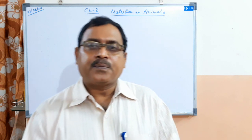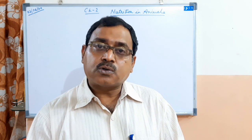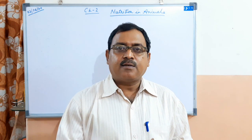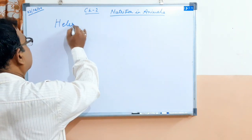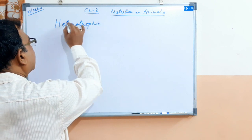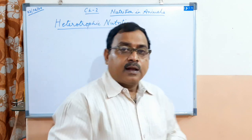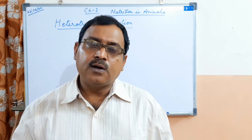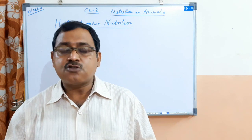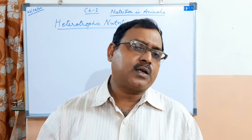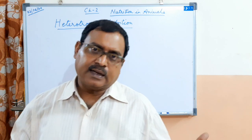When we did nutrition in plants, we learned about autotrophic nutrition. Here we learn about heterotrophic nutrition. All living organisms require food to stay alive. Plants can manufacture their own food by the process of photosynthesis, but non-green plants depend on green plants as well.